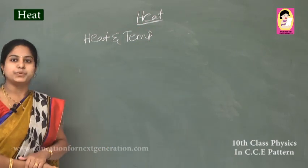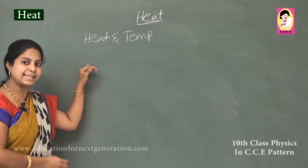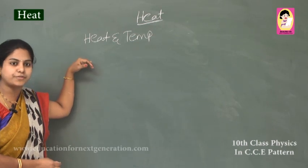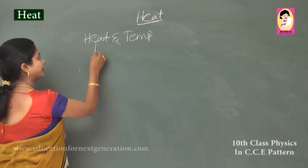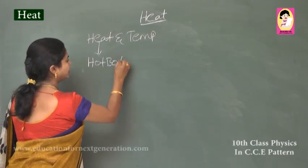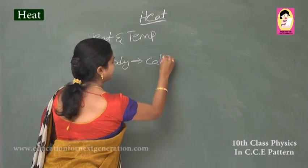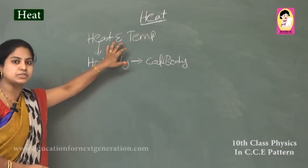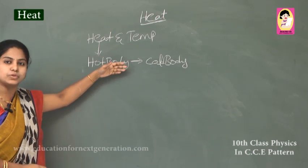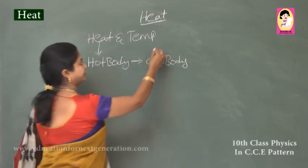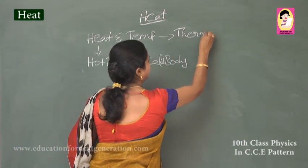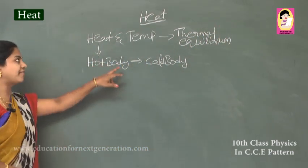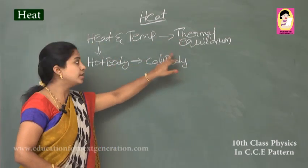There is a difference between heat and temperature. Heat is a form of energy which flows from a hot body to a cold body. Temperature is the degree of hotness or coldness — in other terms, it is a measure of thermal equilibrium. So now we have three terms: heat, temperature, and thermal equilibrium.